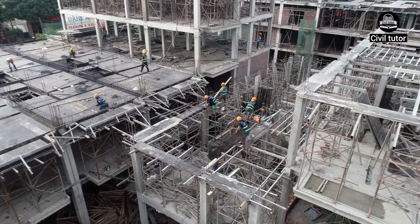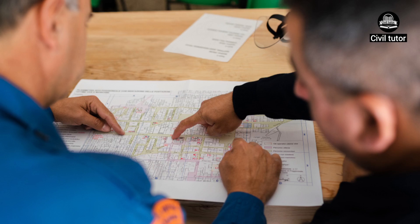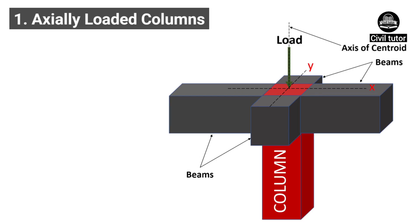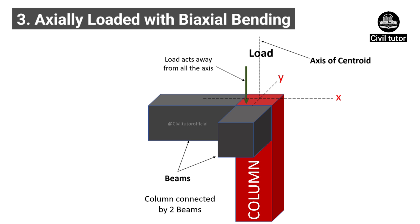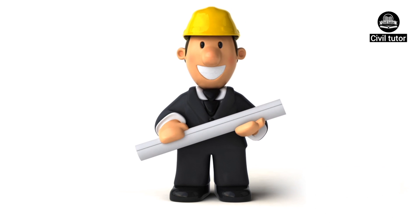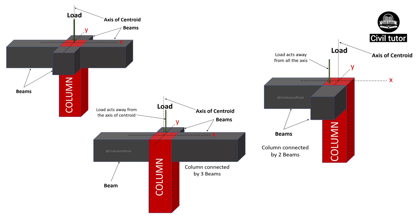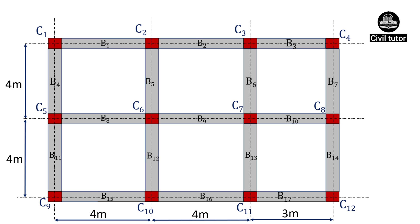While designing the columns of an RCC structure, the first step is to categorize the columns into three categories: axially loaded columns, columns subjected to axial load and uniaxial bending, and columns subjected to axial load and biaxial bending. In this lecture, I am going to explain all three categories of columns briefly, and at the end discuss how to decide whether a column in a building is axially loaded, uniaxially loaded, or biaxially loaded.